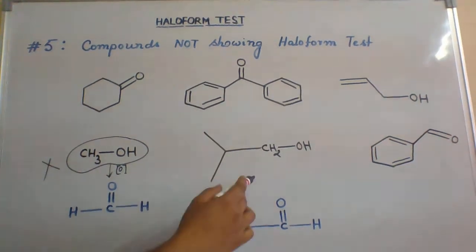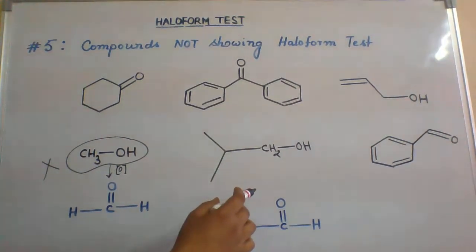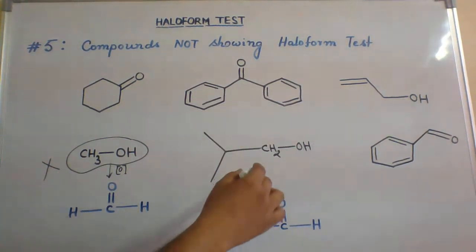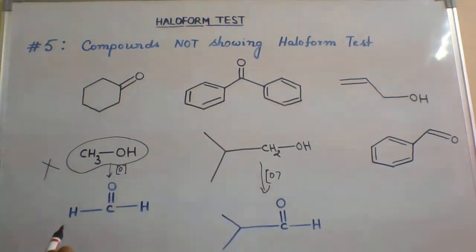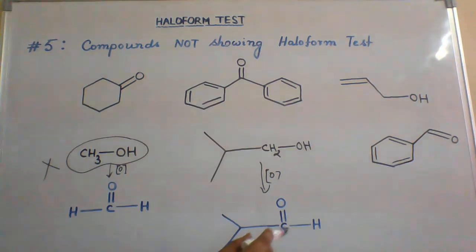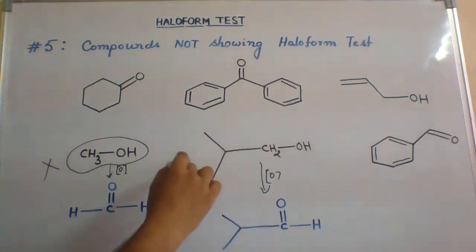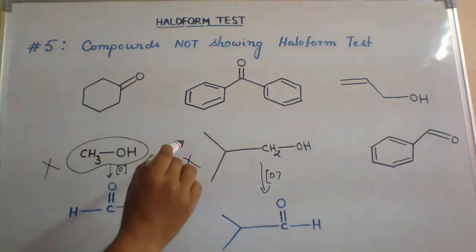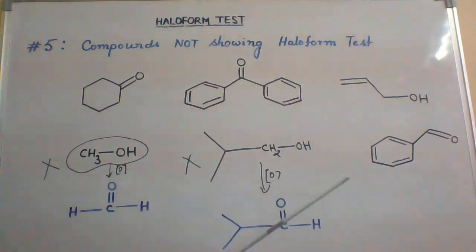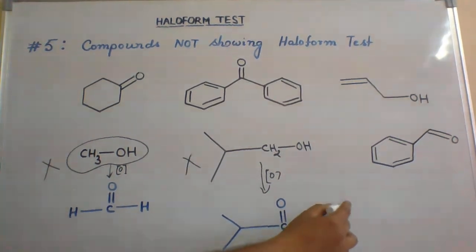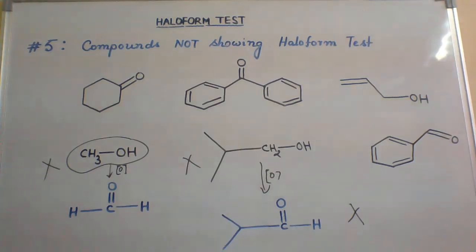Isobutanol, upon oxidation, gives a species that does not have a methyl keto group, so isobutanol does not show the haloform or iodoform test. Benzaldehyde also does not give the iodoform or haloform test.